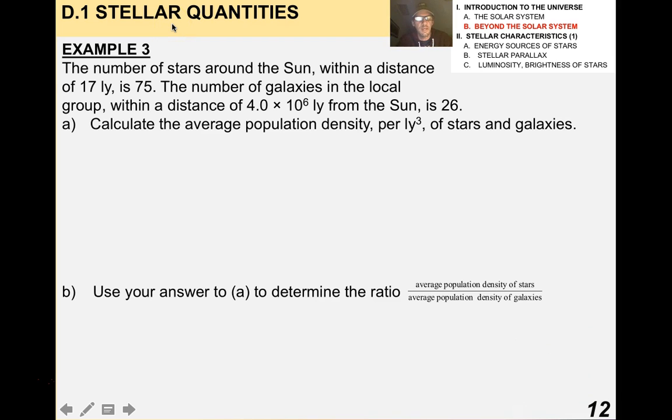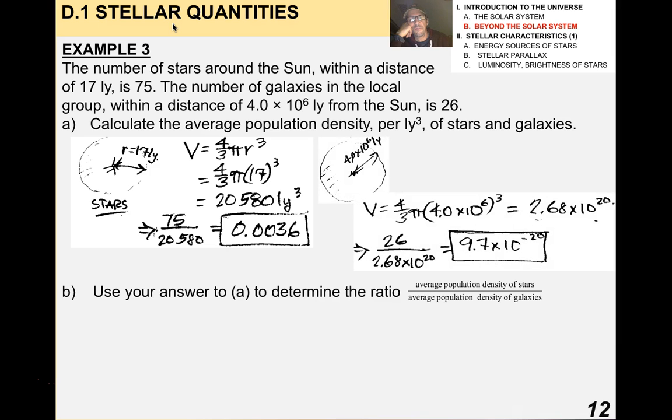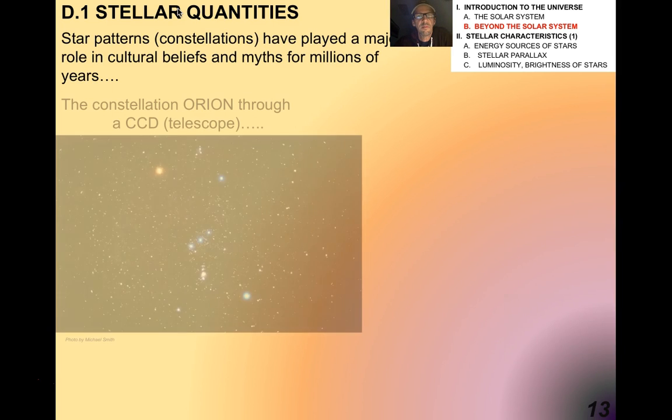A more technical example. Example three, number of stars around the sun. Go ahead and try this one on your own. Asking about the average population density per cubic light year of stars and galaxies. Draw yourself a big sphere, find the volume, and you find that the average population density is about 9.7 times 10 to the minus 20 per cubic light year. The ratio of average population density of stars to galaxies is about 3.7 times 10 to the 16. This means that stars are much more common than galaxies, at least in our cosmic neighborhood. Kind of a mind-blowing thing.